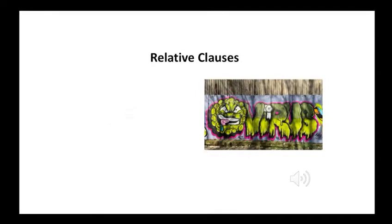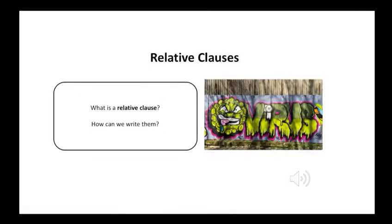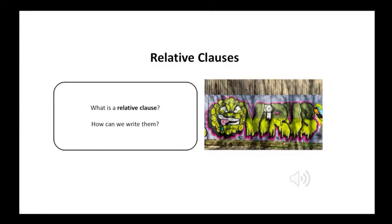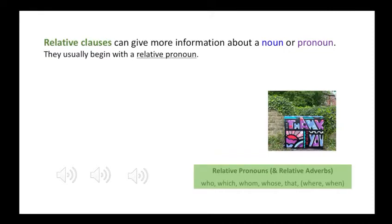Let's revise relative clauses. What is a relative clause and how can we write them? A relative clause gives more information about a noun or a pronoun, and they usually begin with a relative pronoun — that's why they're called relative clauses. Relative pronouns and relative adverbs are: who, which, whom, whose, that, where, and when.